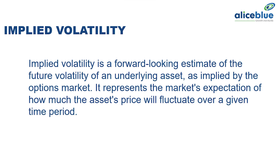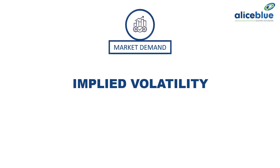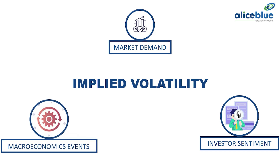The second type is implied volatility. Implied volatility is a forward-looking estimate of the future volatility of an underlying asset as implied by the option market. It represents the market's expectation of how much the asset price will fluctuate over a given time period. Implied volatility is influenced by various factors including market demand, investor sentiment, and macroeconomic events. During times of uncertainty or impending news announcements, implied volatility tends to rise as traders anticipate significant price movement.